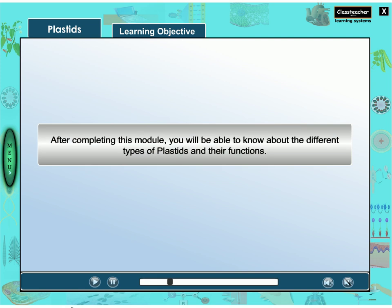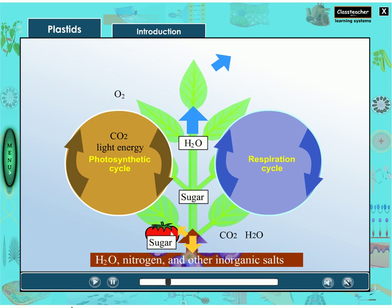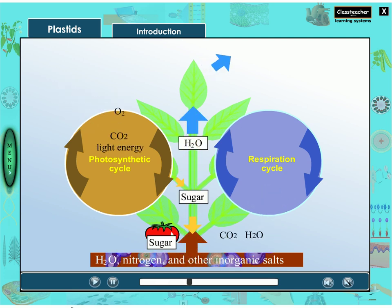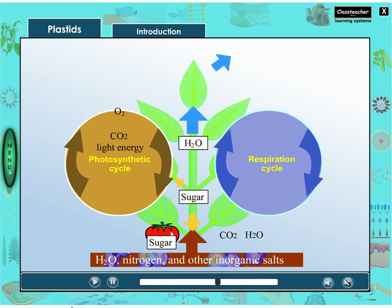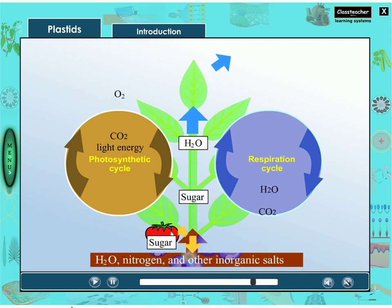Learning objective: after completing this module, you will be able to know about the different types of plastics and their functions. Introduction: the major organelles found in the cells of plants and algae are the site of manufacture and storage of important chemical compounds used by the cell. They often contain pigments used in photosynthesis, and the types of pigments present can change or determine the cell's color.